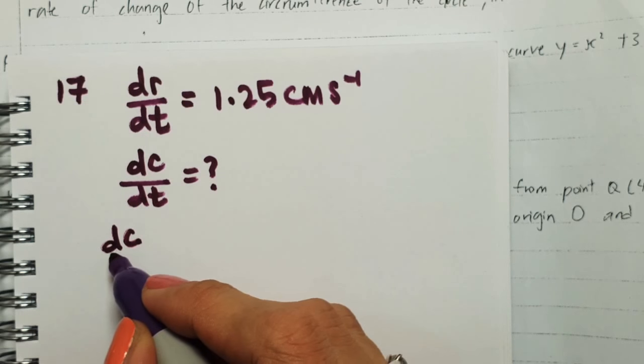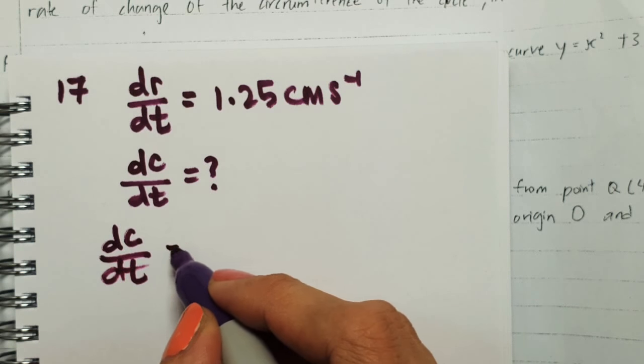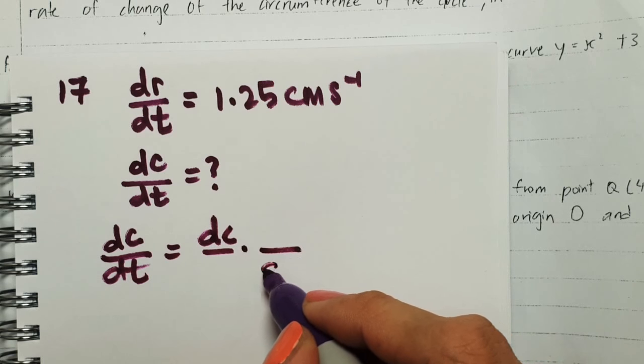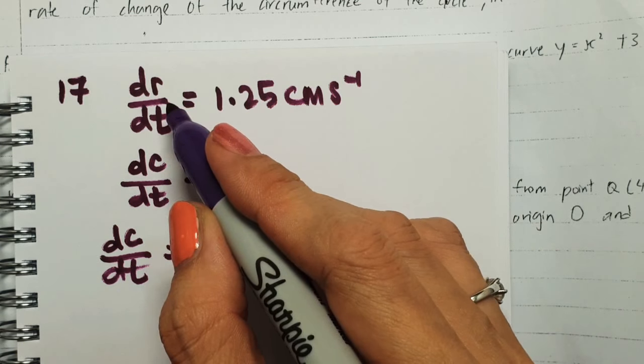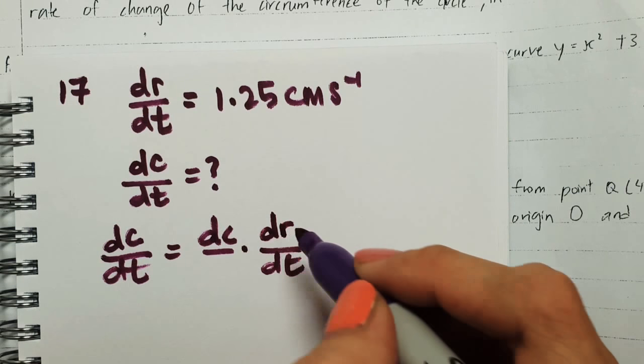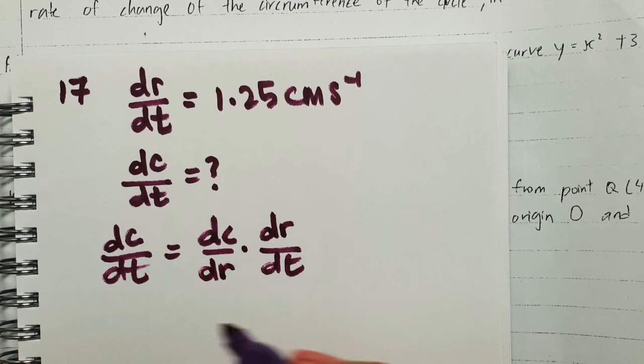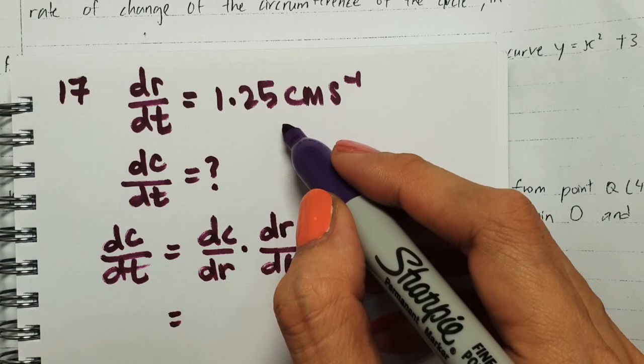Find dc/dt. We apply the chain rule. Split the dc and dt and chain together with the information that we have, that is dr. So chain together by dr. So we have dr/dt, isn't it?